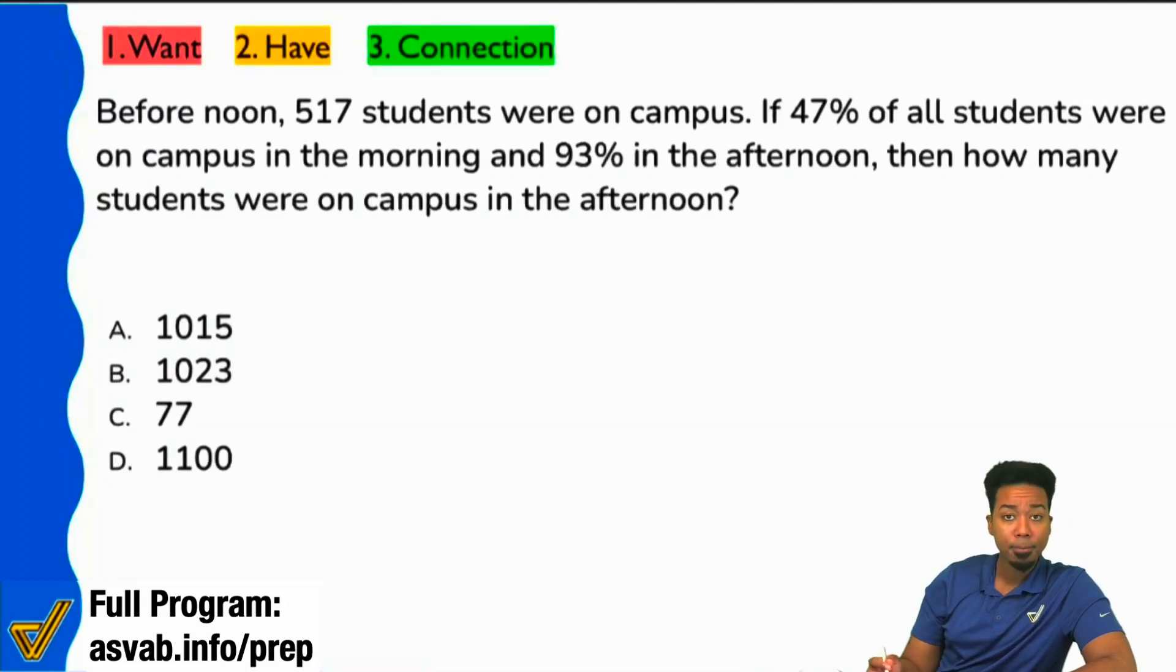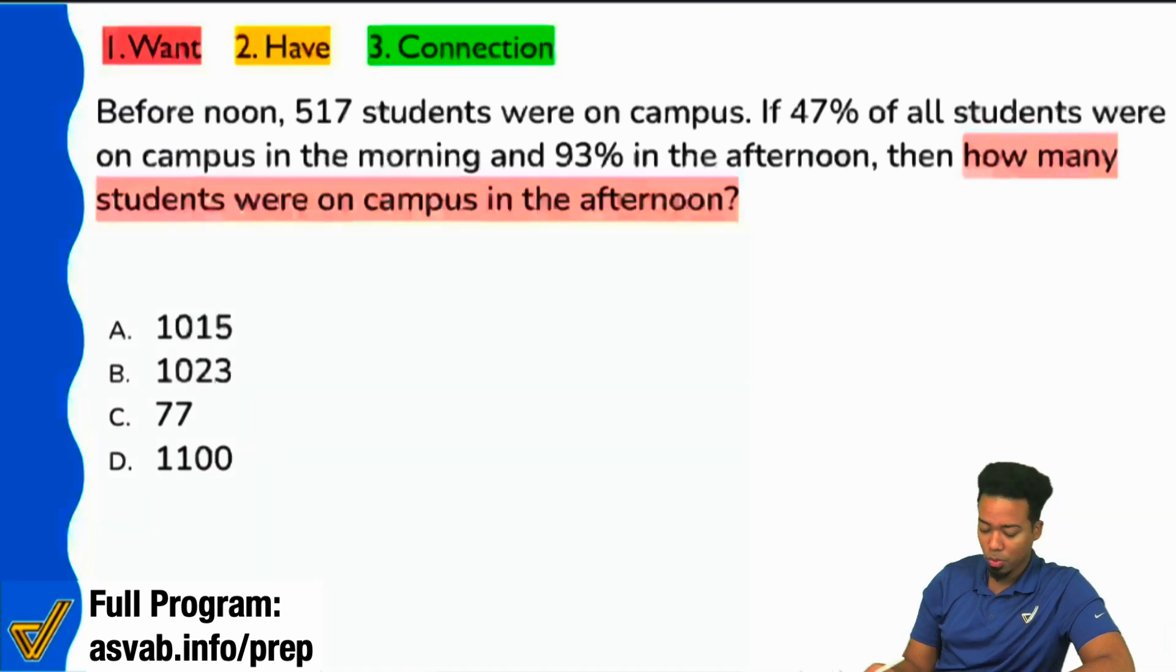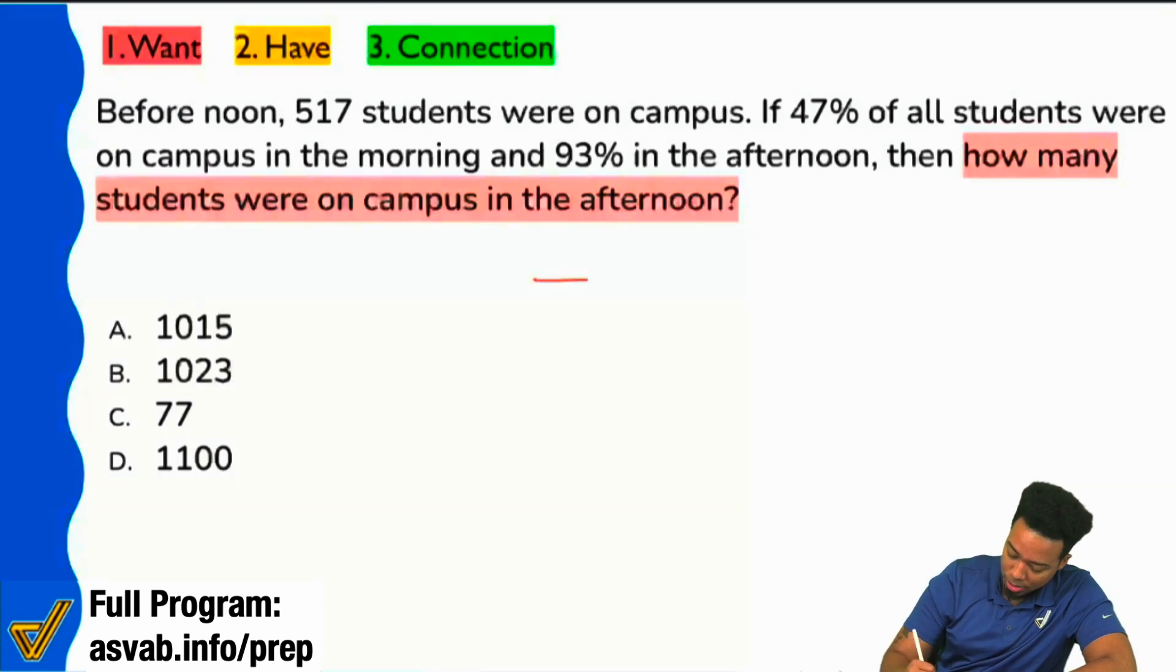Here's what we're looking at. The question says, then how many students were on campus in the afternoon? So everybody, is it true that what we're looking for is blank students?